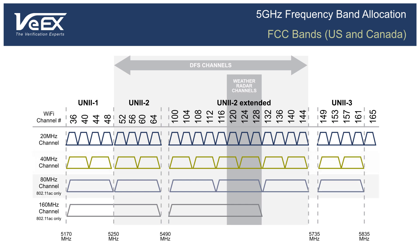By bonding two adjacent 40 MHz channels into a single 80 MHz channel, the 802.11ac standard reaches speeds up to 1.3 Gbps, but at the cost of allowing only 2 non-overlapping channels, or 6 with DFS enabled. The 802.11ac Wave 2 standard defines a 160 MHz channel width to achieve up to 3.4 Gbps, either by bonding contiguous or discontinuous 80 MHz channels together.